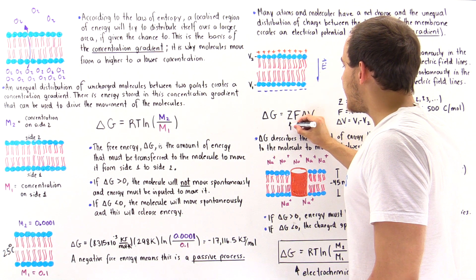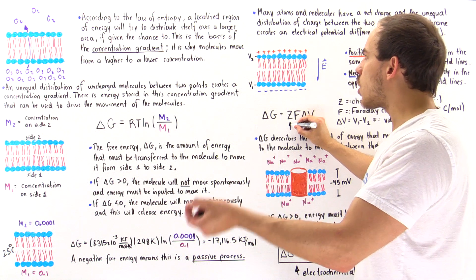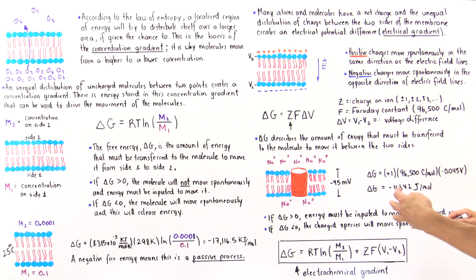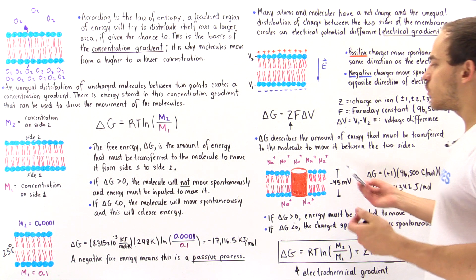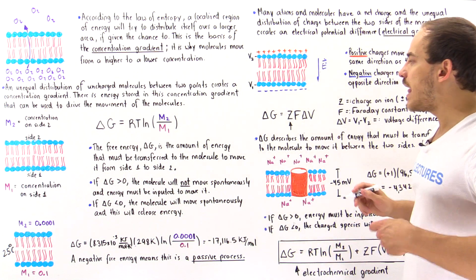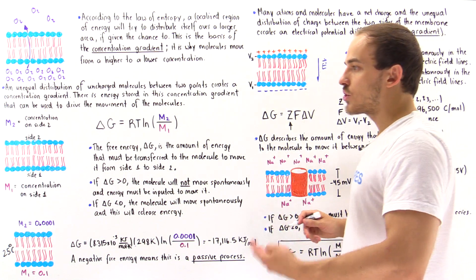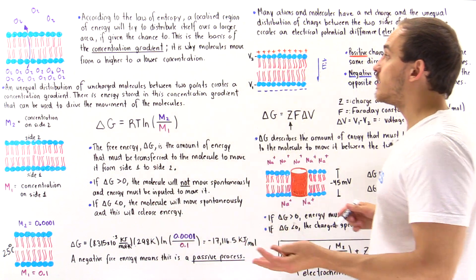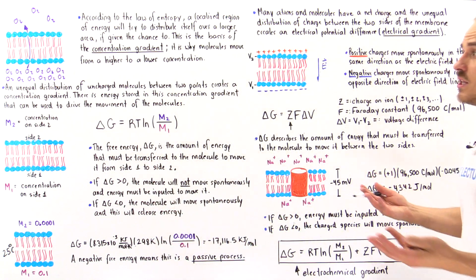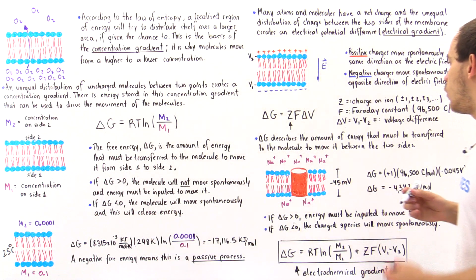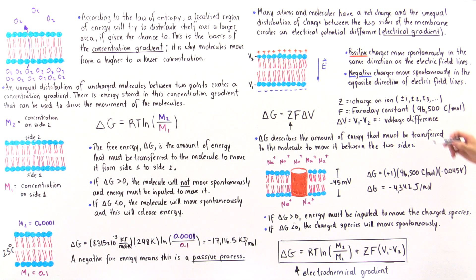Z is basically the value of the charge on that particular ion. So if we're dealing with sodium ions, the Z value is plus one. If we're dealing with chloride ions, the Z value is negative one. If we're dealing with potassium, it's also positive one. So basically, Z is the charge on the ion.